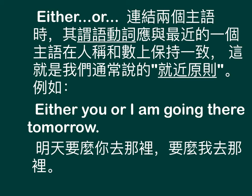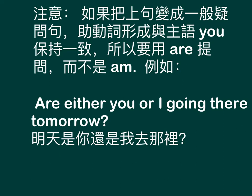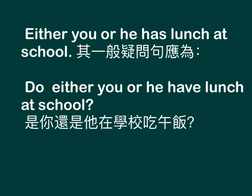For example: Either you or I am going there tomorrow — 明天要么你去，要么我去. Note: if the above sentence is changed to a question, the auxiliary verb agrees with the subject 'you', so we use 'are'. For example: Are either you or I going there tomorrow? — 明天是你还是我去哪里? Another example: Either you or he has lunch at school. The question form is: Do either you or he have lunch at school? — 是你还是他在学校吃午饭?